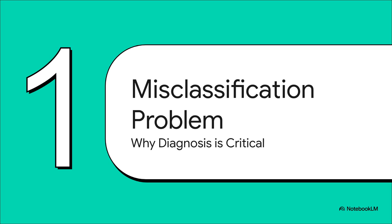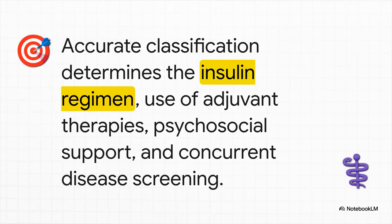It's so important to understand why getting this right is absolutely critical. This isn't just about semantics or getting the label correct — this is about avoiding diagnostic mistakes that can have immediate and sometimes very serious consequences for our patients. Getting that diagnosis right literally sets the course for the right insulin regimen, whether or not to use other therapies, and even the kind of psychosocial support the patient is going to need. If you get it wrong at the start, the whole treatment plan can go off the rails.